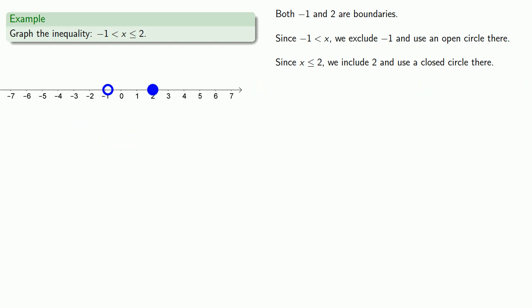Finally, since we want everything between negative 1 less than x, less than or equal to 2, we shade the portion between these two points. Because our interval has a definite beginning and an end, we don't use arrows. Remember, arrows only indicate keep on going, and we don't want to keep on going here, we want to begin here and end here.